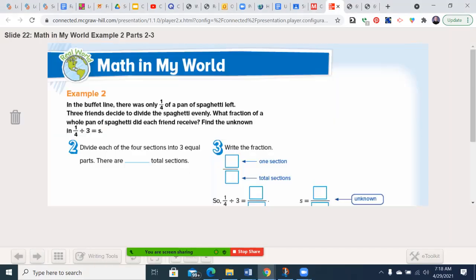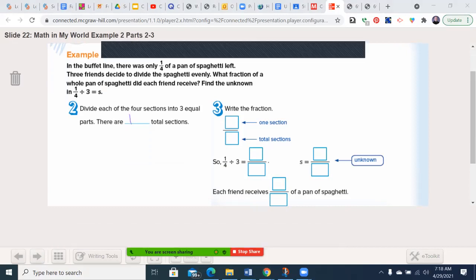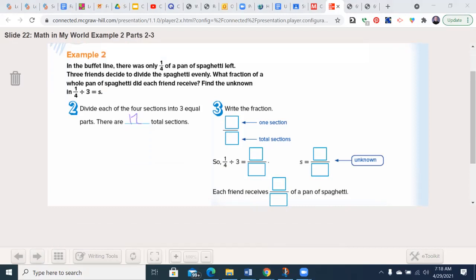Let's move forward. So now we have, in our drawing, there are now 12 total sections. And one section is one. So 1/4 divided by 3 is 1/12. So the answer is 1/12. Each friend receives 1/12.